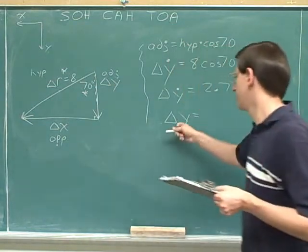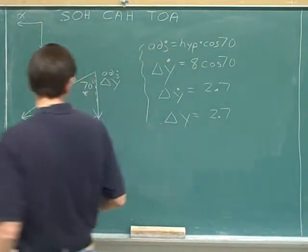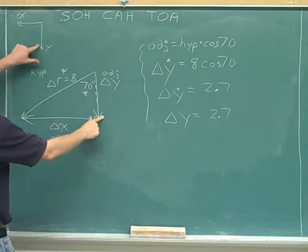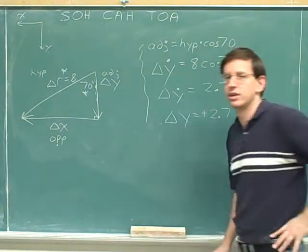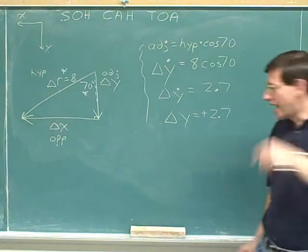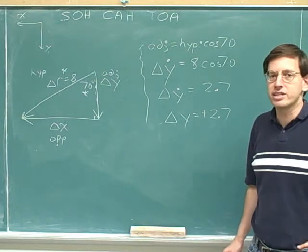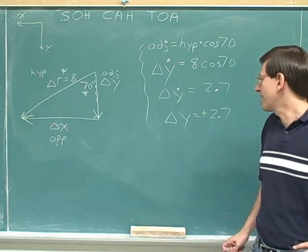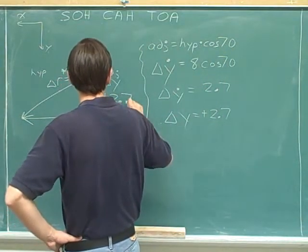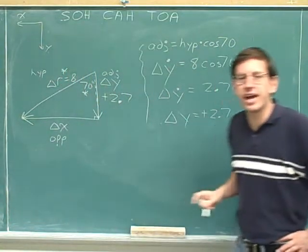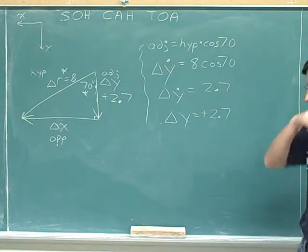Now we go on to the variable without the dot, indicating that we are going to figure out the sign. Delta y here is pointing down, and we've chosen down as the positive direction, so this should be positive. If you just said that delta y was 2.7, I would consider that wrong. Delta y is not 2.7—delta y is positive 2.7. Let's get into the habit of indicating signs not just in front of negative components but also in front of positive components.